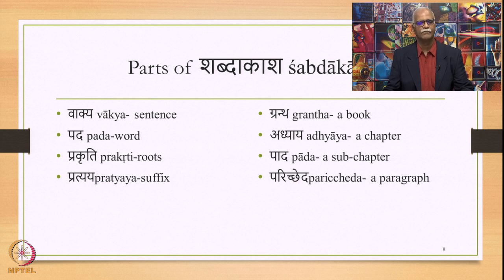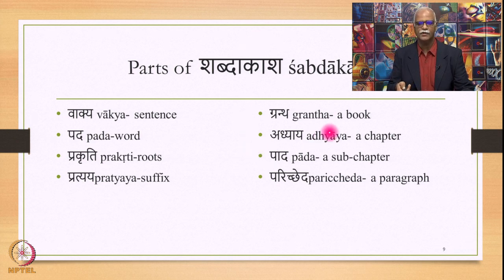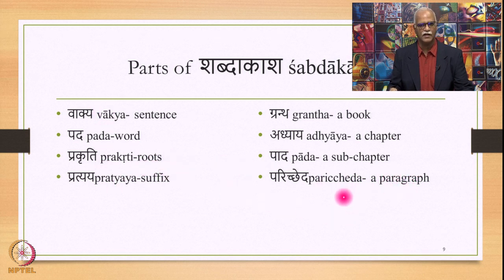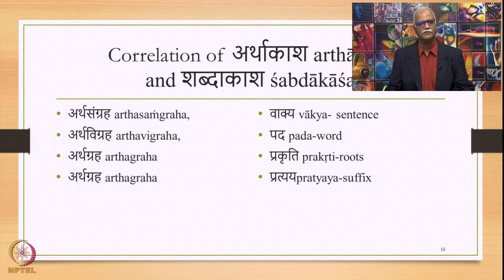We may also find other derived aspects of Shabdakasha on a larger scale. For example, a Grantha or book is part of the Shabdakasha on a larger scale, made up of its components such as Adhyaya or chapter, which is further made up of Padas, a sub-chapter, Parichedha or paragraph, and then Vakya. All this is part of the Shabdakasha which is linked with Arthakasha, and this correlation of Arthakasha and Shabdakasha needs to be studied in this context.